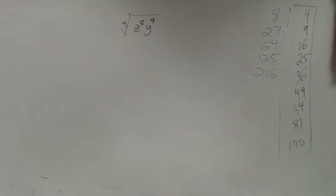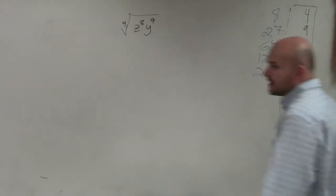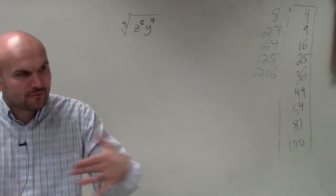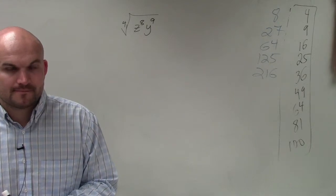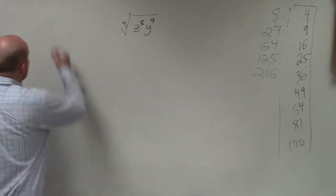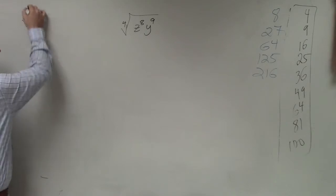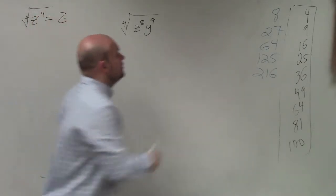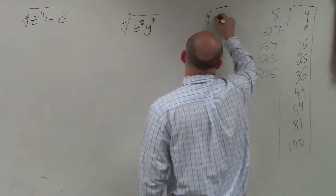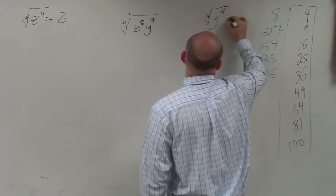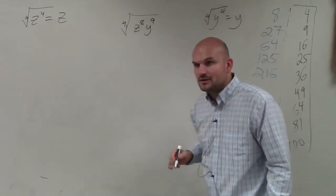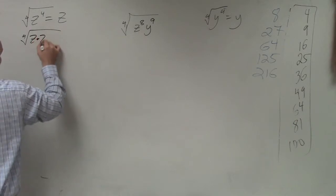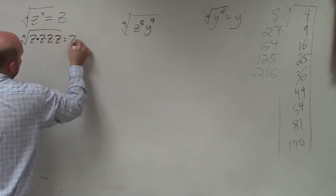So the first thing I want you to do on the next problem is the easiest thing you can do. As I mentioned, there are two different ways you can break this apart. The main important thing I want you to understand is that the fourth root of z to the fourth is equal to z. The fourth root of y to the fourth is just equal to y. That's the same thing as the fourth root of z times z times z times z, which is just equal to z.